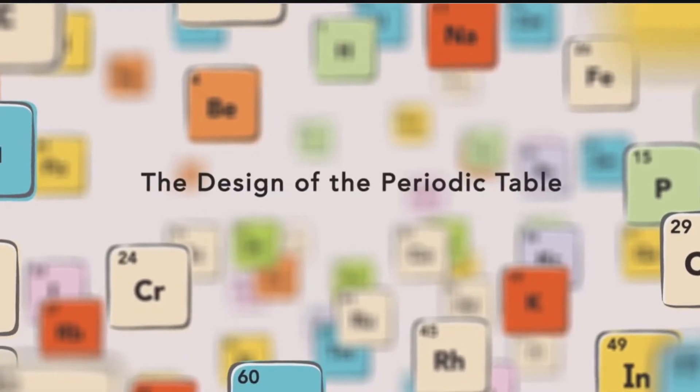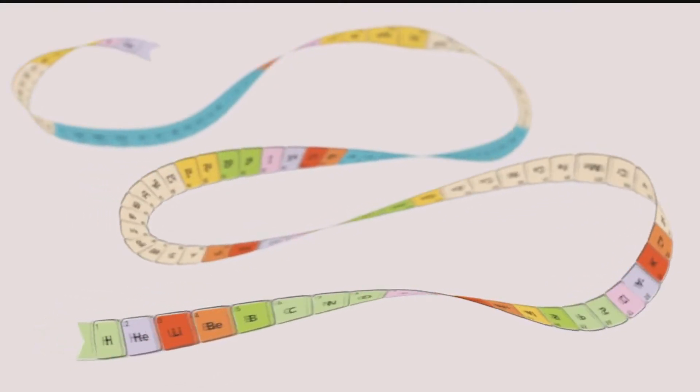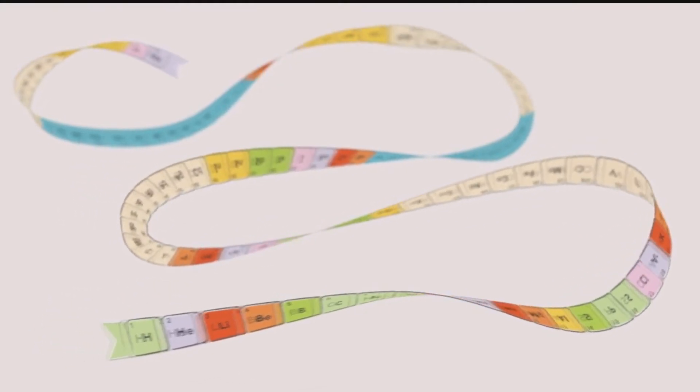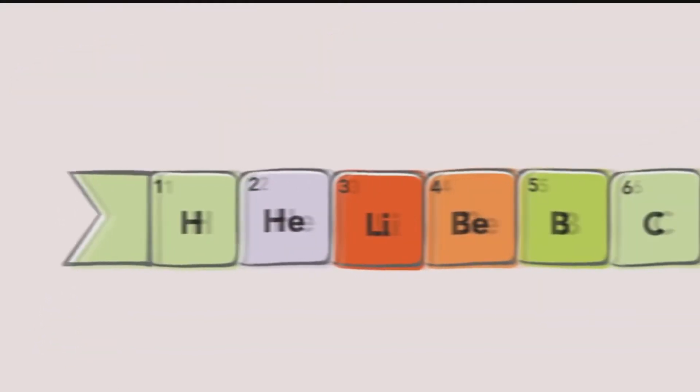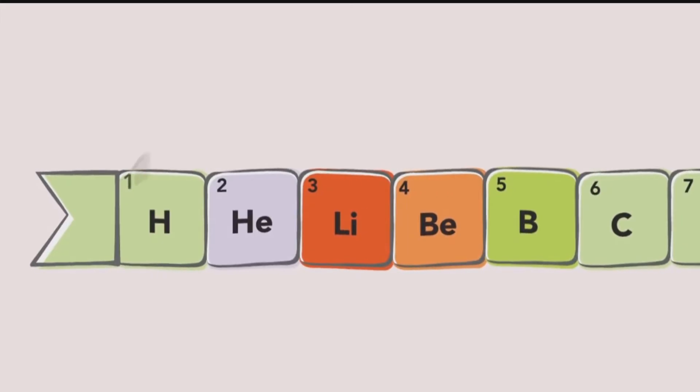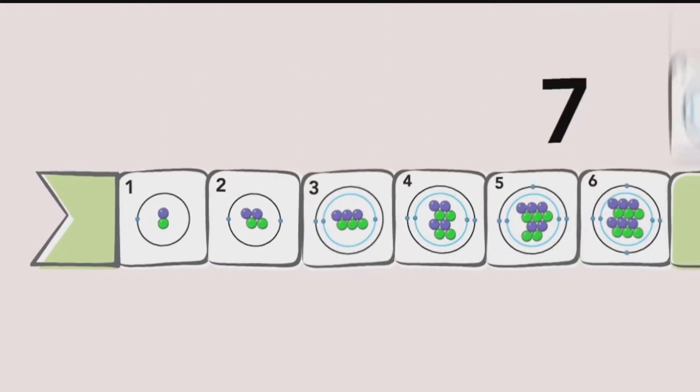The Design of the Periodic Table. Scientists have identified 118 different elements. The modern periodic table organizes the elements by atomic number, which is the number of protons in the nucleus.